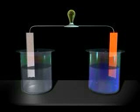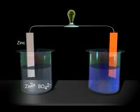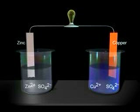The spontaneous copper-zinc oxidation-reduction reaction can be made to yield useful electrical work by incorporating it in a voltaic cell. The zinc electrode is immersed in a solution of zinc sulfate, and the copper electrode is immersed in a solution of copper 2 sulfate.